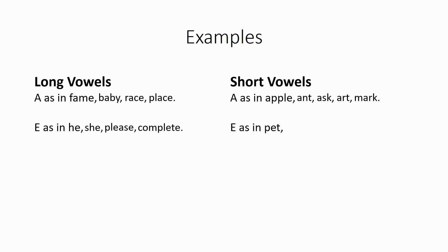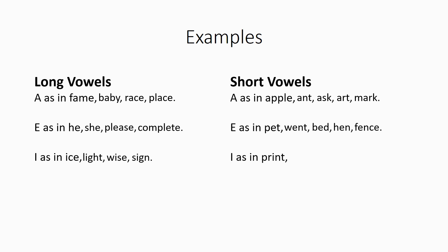Short E will be like in pet, went, bed, hen, fence. So, E. Long I will be like in I, as in ice, light, wise, sign. So, I. But if it's short, it's I, like in print, bill, video, picture, dig.